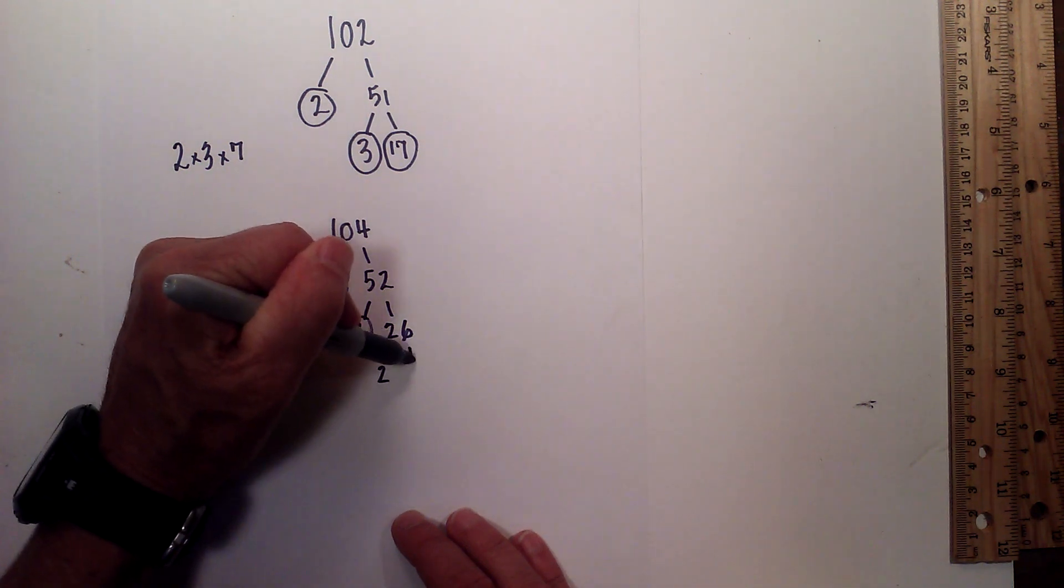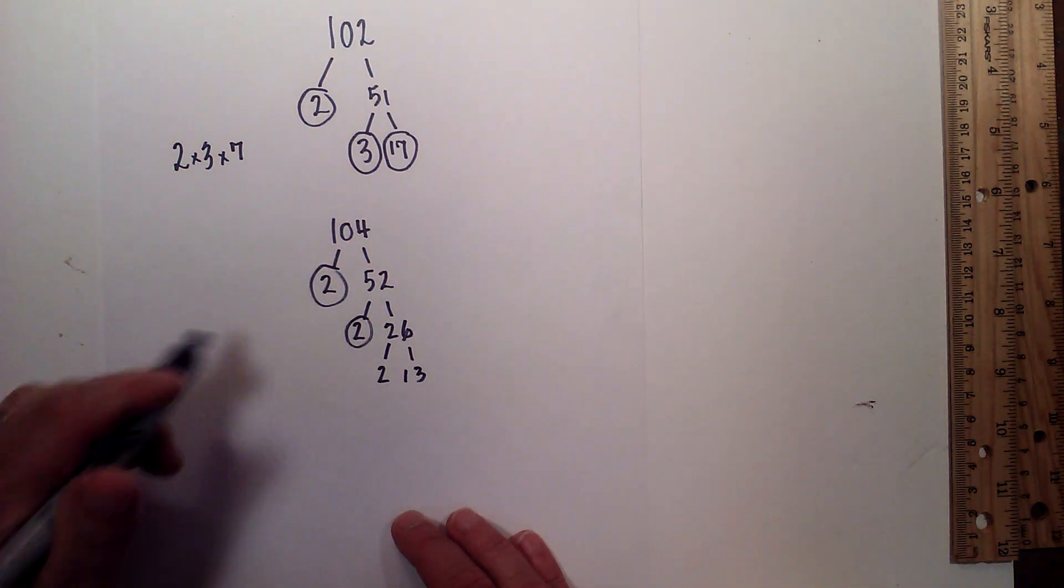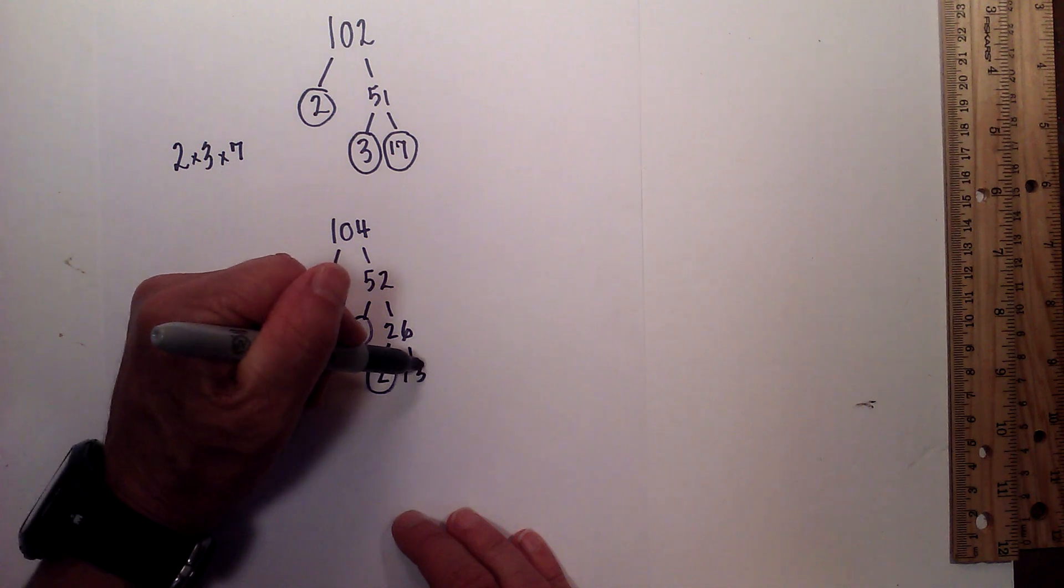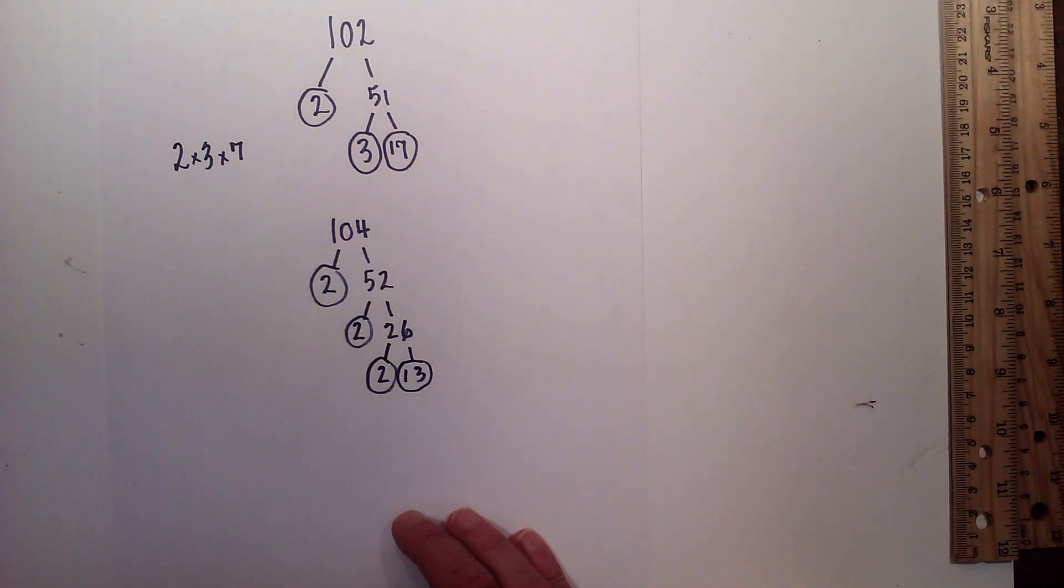And now 2 times 13 equals 26. Circle the 2 because it is prime. So the prime factorization and the 13 is prime. I need to circle that.